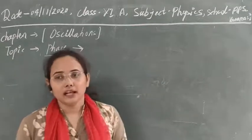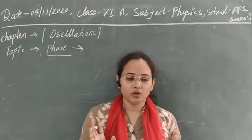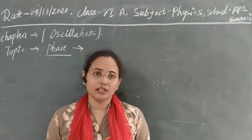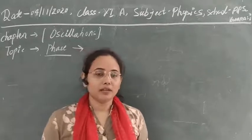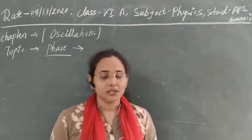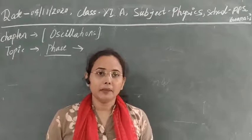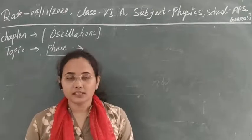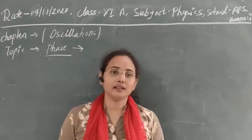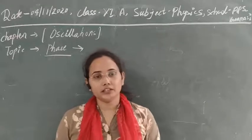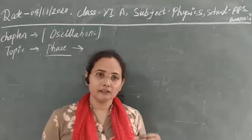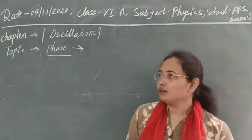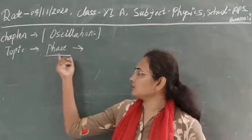Today we have to see what happens when two periodic motions are superposed over each other. We saw that if two periodic functions have the same frequency, the same angular frequency, then after superposition they will still be periodic, and that resultant periodic function will have a different resultant amplitude and a different resultant phase. So here one important word that comes up is phase. Let's see what phase is and what is the importance of knowledge about phase.